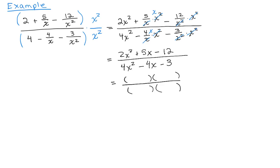All right. So, 2x squared plus 5x minus 12, that factors to 2x minus 3 times x plus 4. And 4x squared minus 4x minus 3 factors to 2x minus 3 times 2x plus 1.